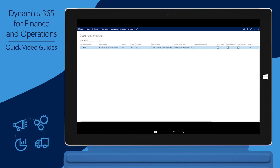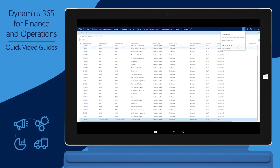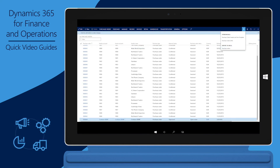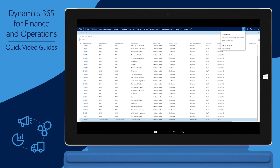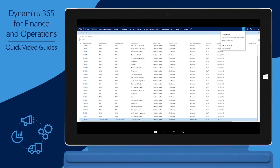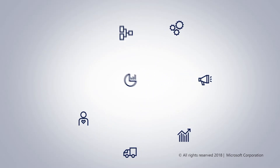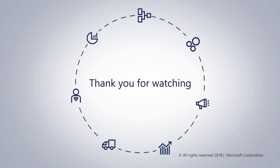After you've added the template, it appears on the list page. Switch to the specific company that the template was associated with and open the Purchase Orders list page. On the Open & Office menu, you'll see that the new template is available for use. If you don't see the template, make sure that your language setting and the country or region codes enabled in Finance and Operations match the settings for the template. This brings us to the end of this presentation. We hope you found this information useful. Thank you for watching.